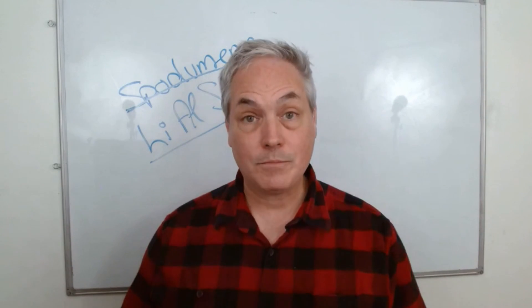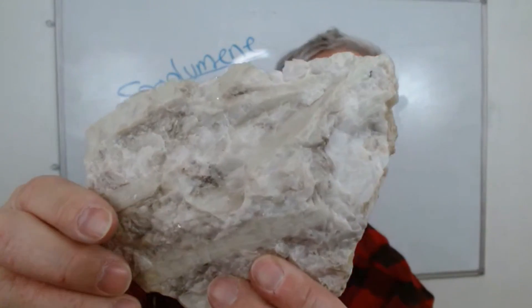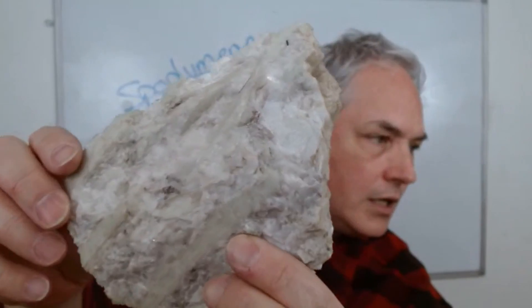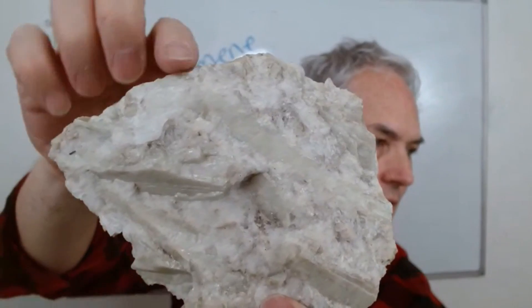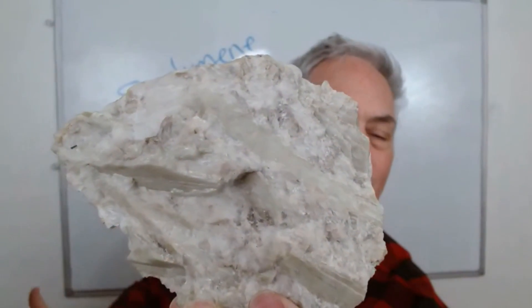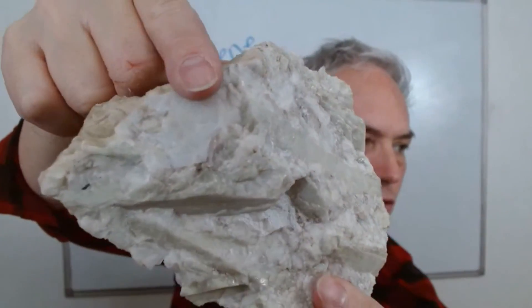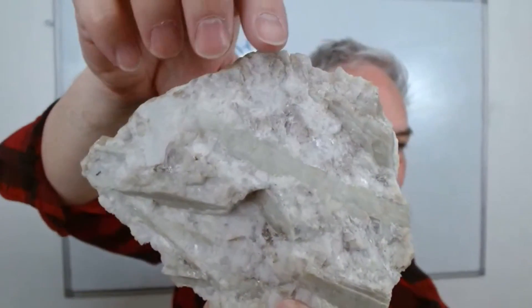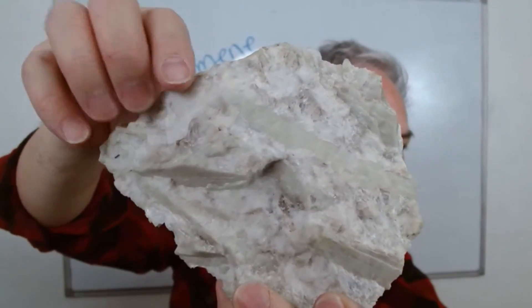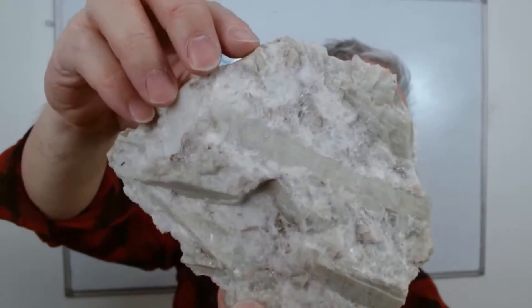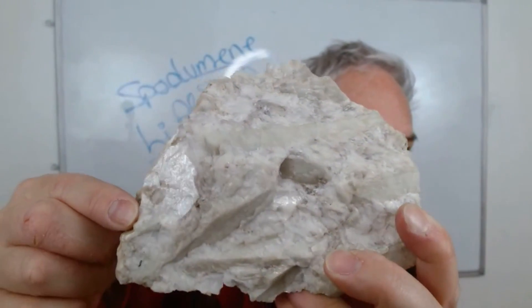I'm going to show you this specimen and then some other pictures from the internet. This sample is from what we call a pegmatite — a place where very hot fluid brings materials and has time to create longer crystals like these. In granite, you usually have very small crystals because of pressure and conditions, but in a pegmatite you get these longer crystals.